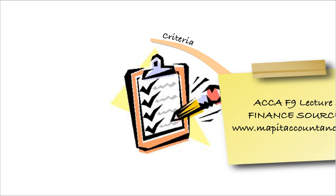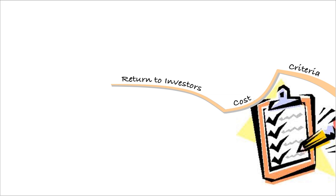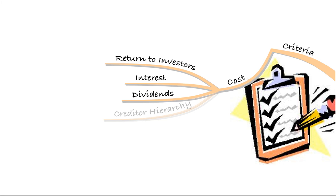The finance sources lecture looked first at the criteria for selecting the type of finance the business requires. We need to finance our investments in some form, and we have two choices: debt or equity. The first criterion is cost — the return you need to pay to investors. If it's debt you'll need to pay interest; if it's equity you'll need to give dividends. That will be determined by the creditor hierarchy, which we'll talk about in later lectures.